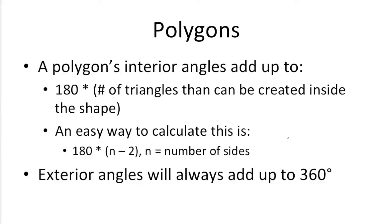So a polygon's interior angles always add up to 180 times n minus 2, n being the number of sides. So for example, if we have a hexagon, which is a six-sided polygon, we would just take 180 times 6 minus 2, so that's 180 times 4, which is equal to 720, which would be the total for the polygon's interior angles.